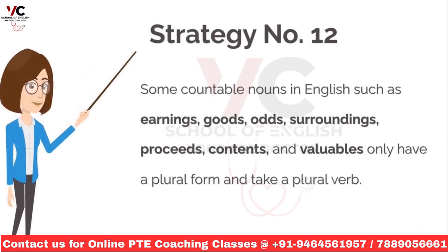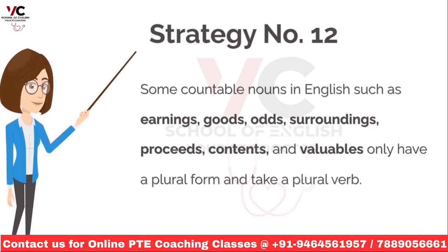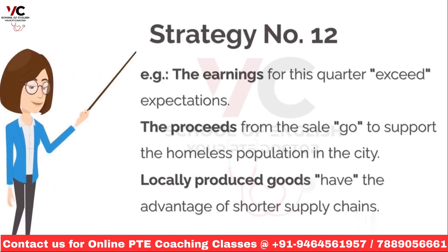Strategy number 12: some countable nouns in English such as earnings, goods, odds, surroundings, proceeds, contents, and valuables only have a plural form and take a plural verb. For example, the earnings for this quarter exceed. The proceeds from the sale go. Locally produced goods have.